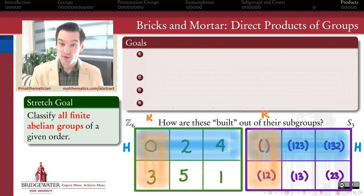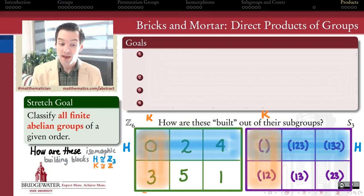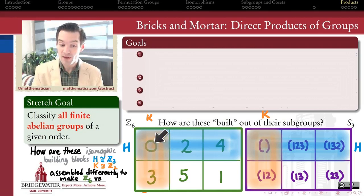Both of these groups have six elements and they both have this subgroup of order 3 that I can identify, this subgroup of order 2 that I can identify. Given all that data, these building blocks are isomorphic. This H is isomorphic to that H. This K is isomorphic to that K.